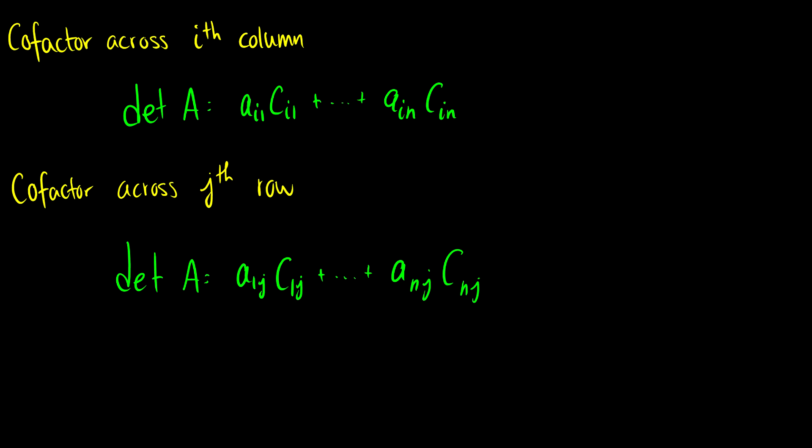The nice thing is that we can do this around the ith column or across the jth row. Why can we do this? Well before if we did this we'd have to count - this one's plus, this one's minus, this one's plus, this one's minus, this one's plus, and so on and so forth.